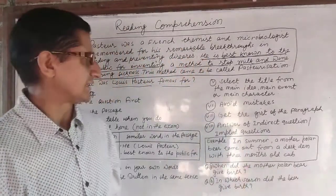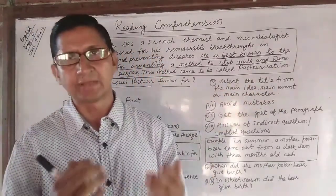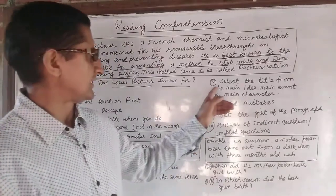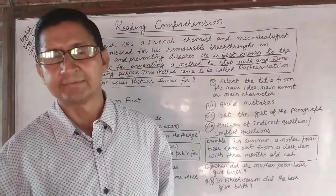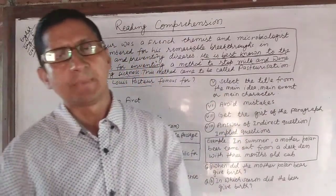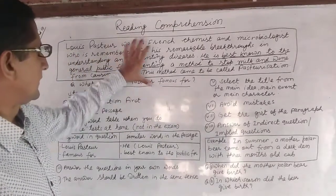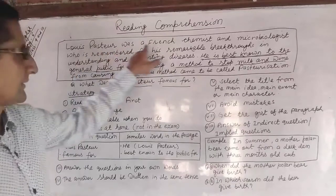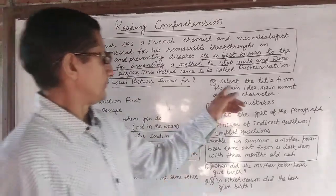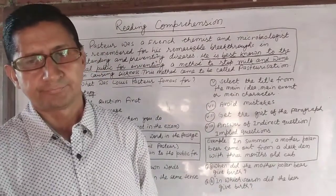The fifth strategy is: select the title from the main idea, main events, or main characters. Sometimes you are asked to write a title of the passage. In such a case, select the title from the main idea, main event, or main character of the passage. For example, if asked to write the title of the Louis Pasteur passage, you can write it from the main character, which is Louis Pasteur.